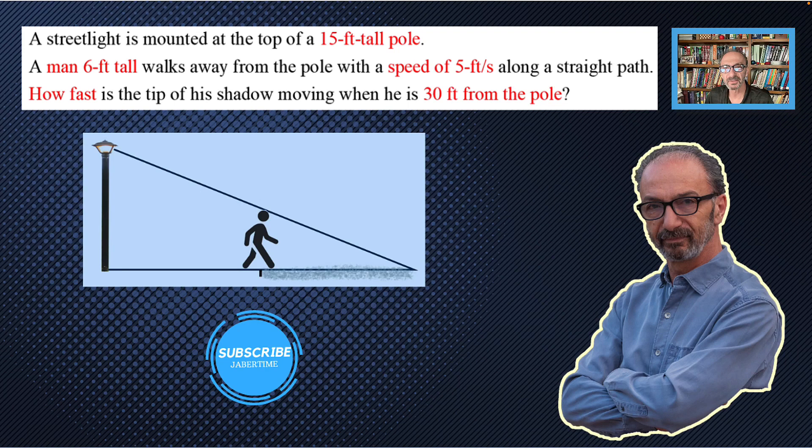A street light is mounted at the top of a 15-foot tall pole. A man 6 feet tall walks away from the pole with a speed of 5 feet per second along a straight path. How fast is the tip of his shadow moving when he is 30 feet from the pole?